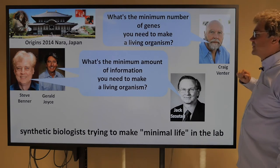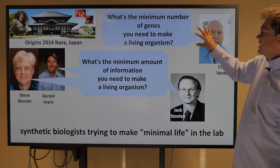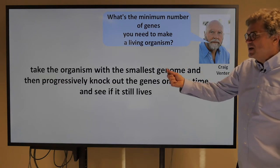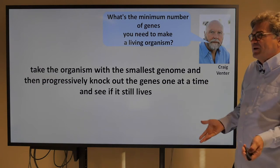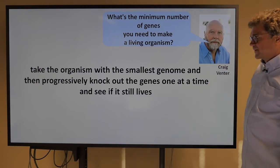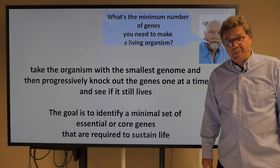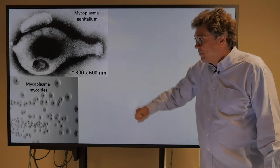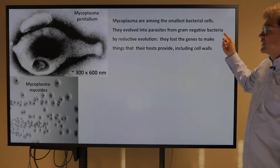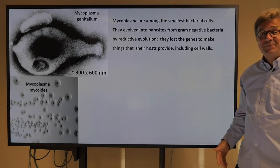There's also Craig Venter, who asks a more specific question: what's the minimum number of genes you need to make a living organism? The idea is to take an organism with the smallest genome and progressively knock out genes one at a time to see if it still lives. The goal is to identify a minimal set of essential core genes required to sustain life. They used Mycoplasma genitalium and M. mycoides — among the smallest bacterial cells, which evolved into parasites from gram-negative bacteria by reductive evolution, losing genes to make things their hosts provide, including cell walls.